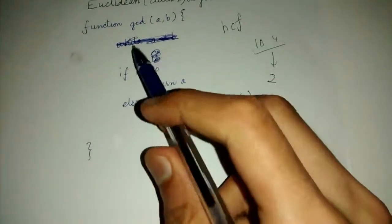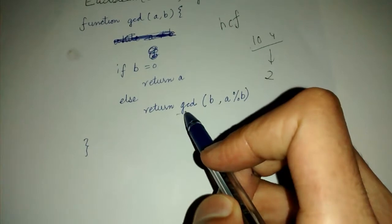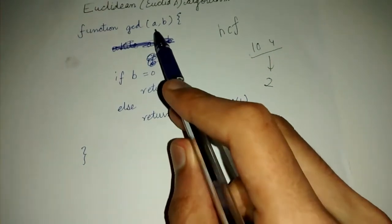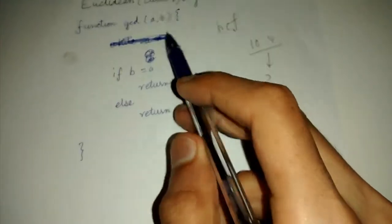So this is a recursive implementation because GCD calls itself. We are given two integers in the function. We pass them as arguments.